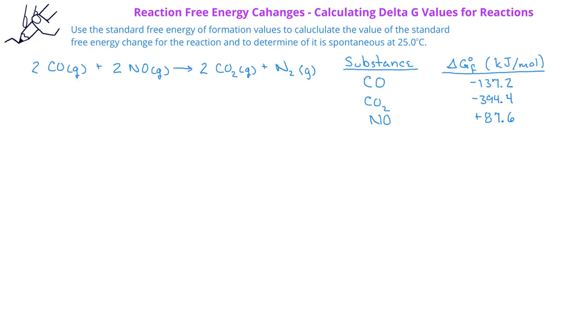Let's look at an example of using this new equation to find the standard free energy change for a reaction. In this case, we're asked to use the tabulated free energy of formation values to determine if the reaction of 2 moles of carbon monoxide gas reacting with 2 moles of nitrogen monoxide gas to produce 2 moles of carbon dioxide and 1 mole of nitrogen gas is a spontaneous reaction at 25.0 degrees Celsius.